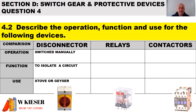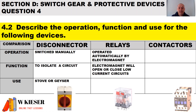For relays, in terms of the operation, it is operated automatically by an electromagnet. Its function is to open or close low current circuits, and its use is to operate the lights of a motor vehicle.